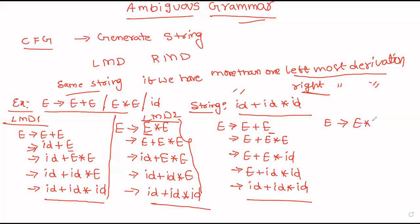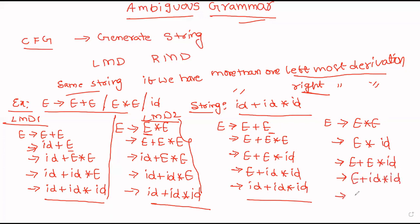Rightmost derivation 2: E → E into E, then E → id. Now this E is replaced with E plus id. Observe the pattern carefully: id plus id into id. This is rightmost derivation 2. Based on the rightmost derivation also, it is ambiguous grammar.